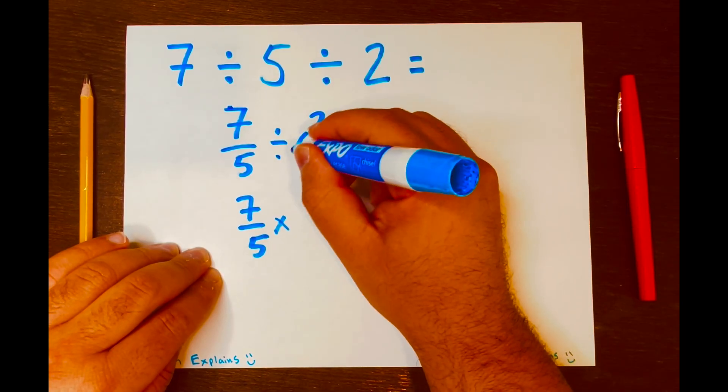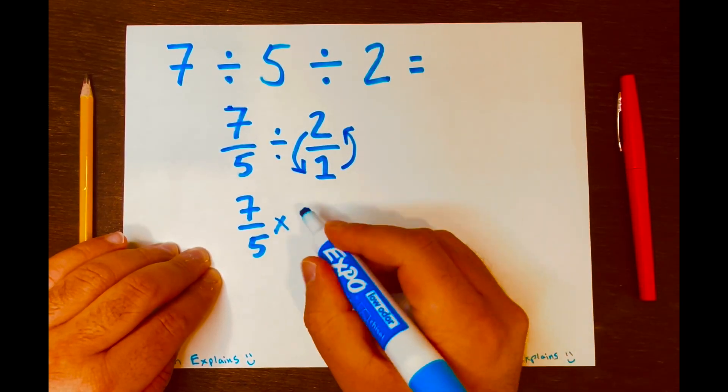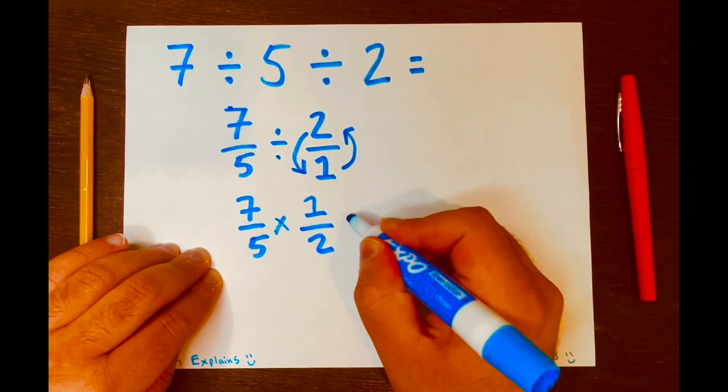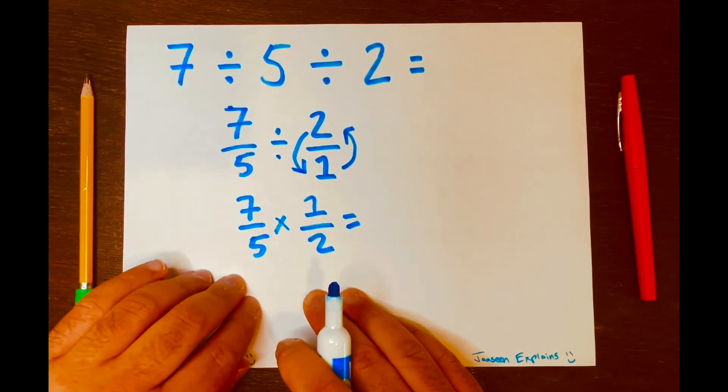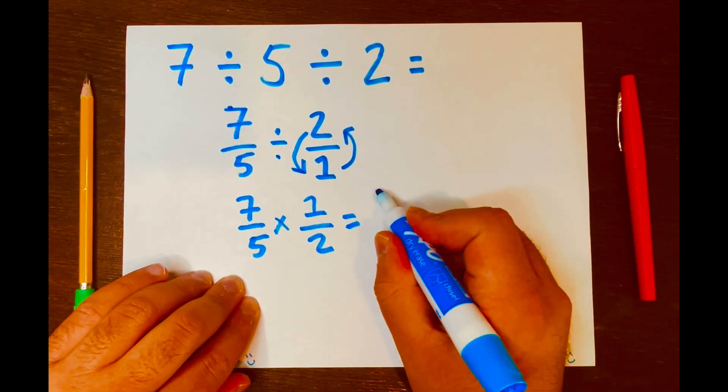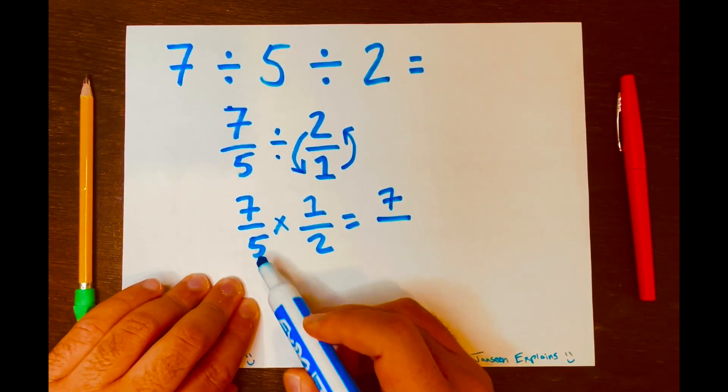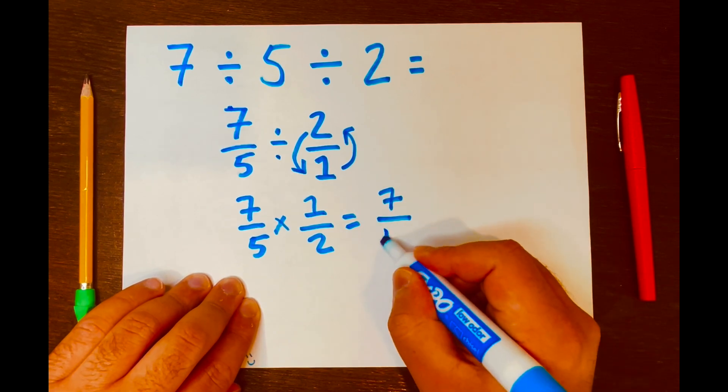So the 1 will go on top of the fraction and 2 will go at the bottom of the fraction. So it'll be written like this, 1 over 2. And all you have to do now is just multiply across. 7 times 1 is 7 over 5 times 2 equals 10.